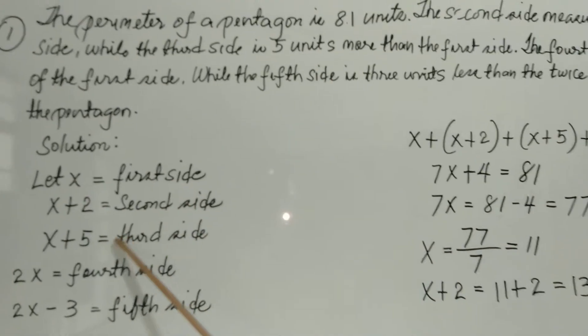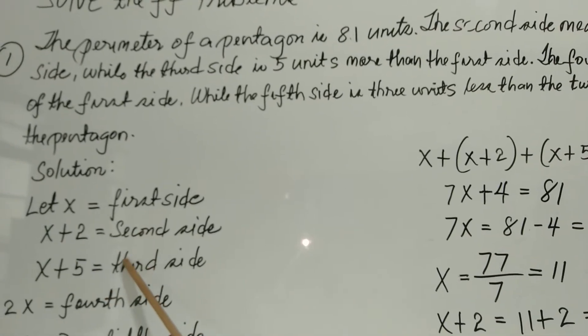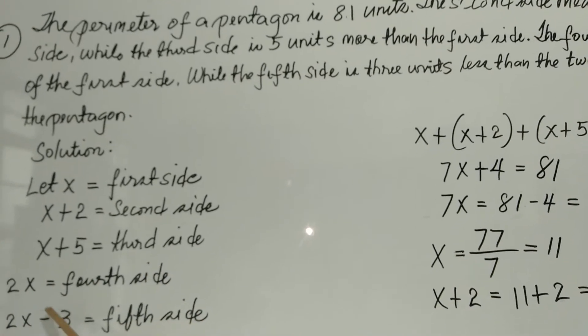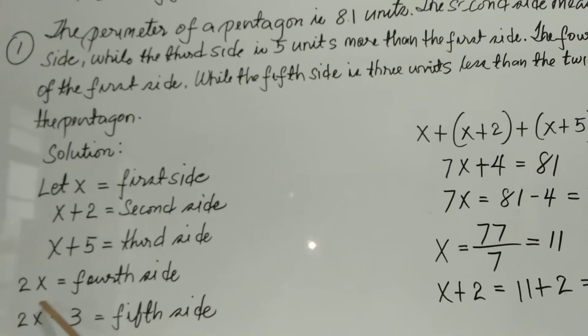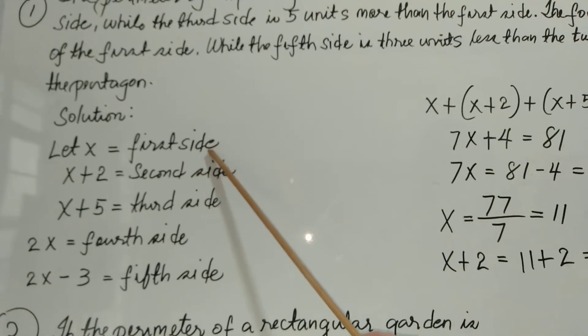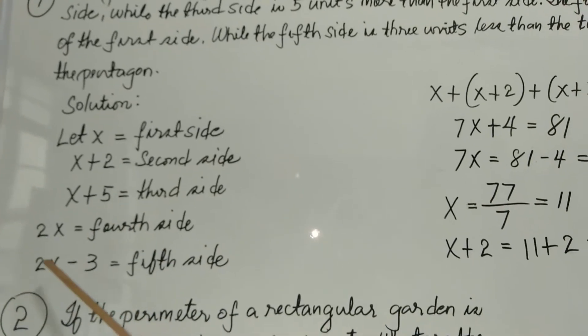It says that the second side is 2 units more than the first side, and the third side is 5 units more than the first side. The fourth side is twice the first side, and the fifth side is 3 units less than twice the first side.